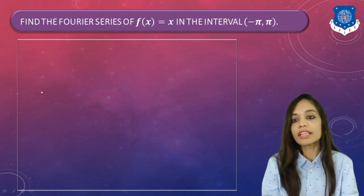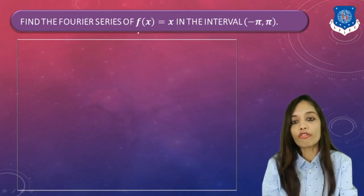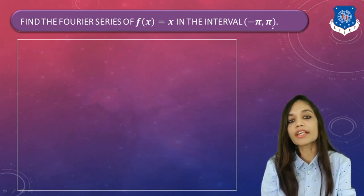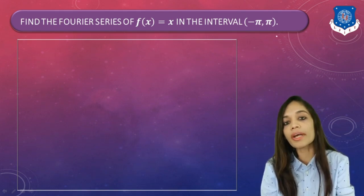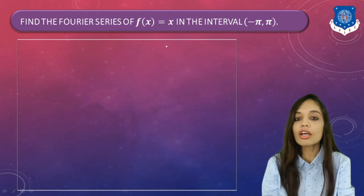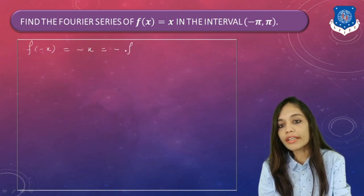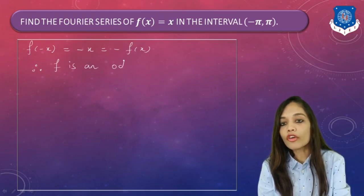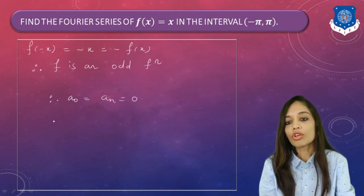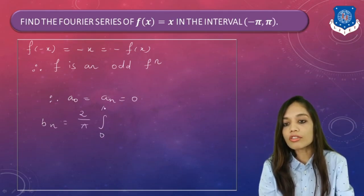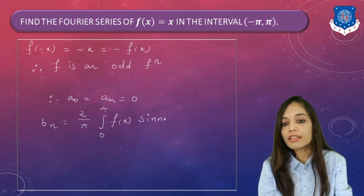Example 1: Find the Fourier series of f(x) = x on [−π, π]. The interval is symmetric, so we check: f(−x) = −x = −f(x). Therefore f is an odd function. Hence a₀ and aₙ equal 0, and we only need to find bₙ: bₙ = (2/π) ∫₀^π x sin(nx) dx.